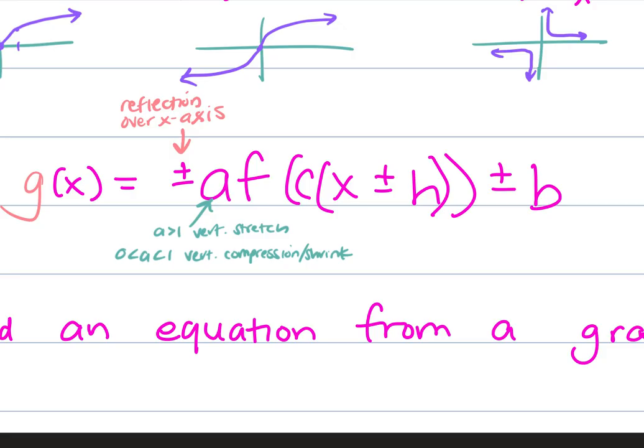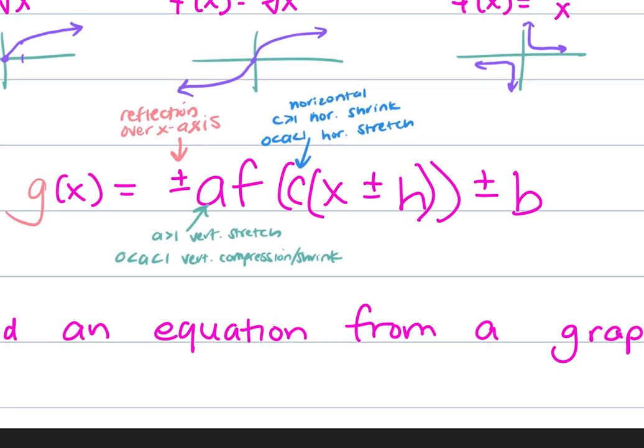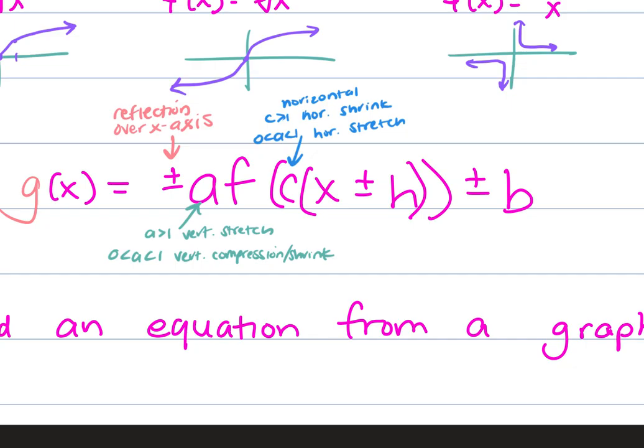The c, or the number being multiplied inside the function, is a horizontal. If it's bigger than 1, it's a horizontal shrink. If it's in between 0 and 1, it's a horizontal stretch. When you add and subtract inside the function, this is a shift, horizontal shift. So, this is a, if it's positive, we go left. If it's negative, we go right.